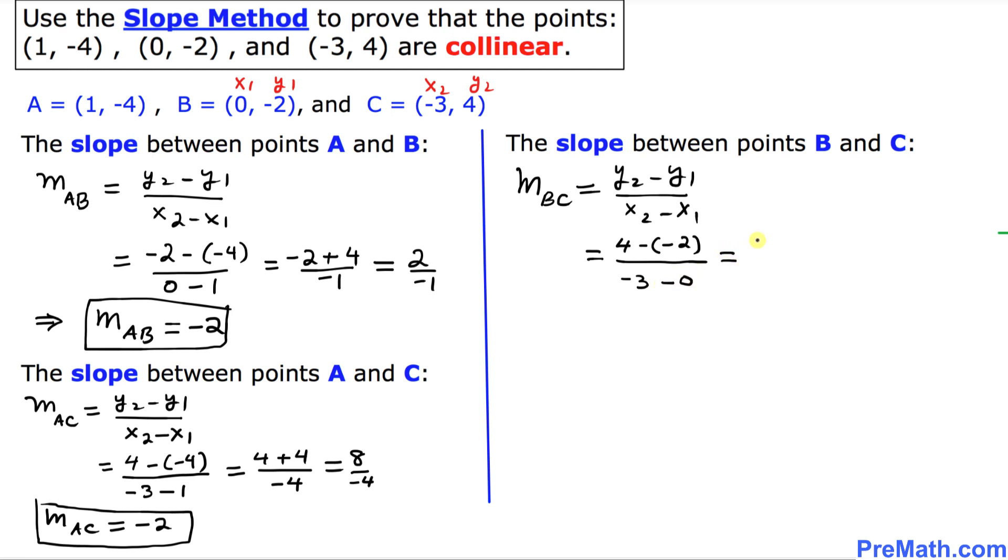Let's simplify: 4 plus 2 divided by -3, which is equal to 6 divided by -3. So thus, that means slope between B and C turns out to be -2.